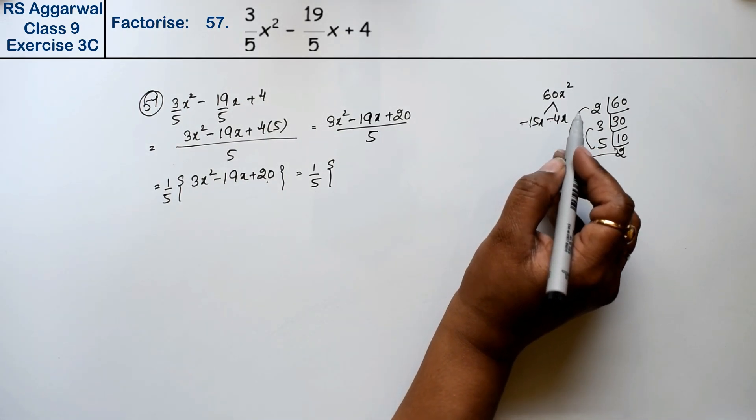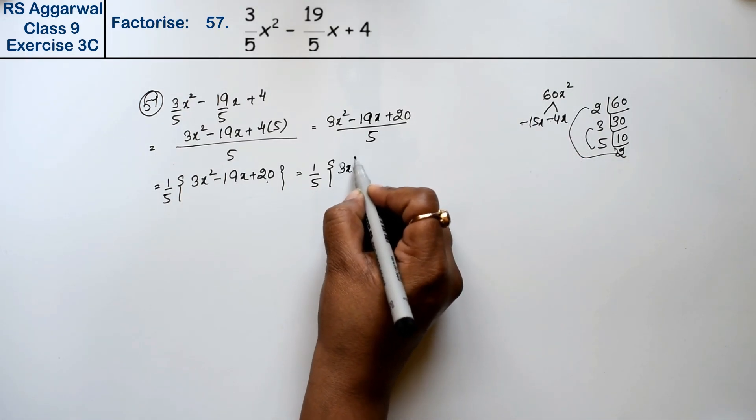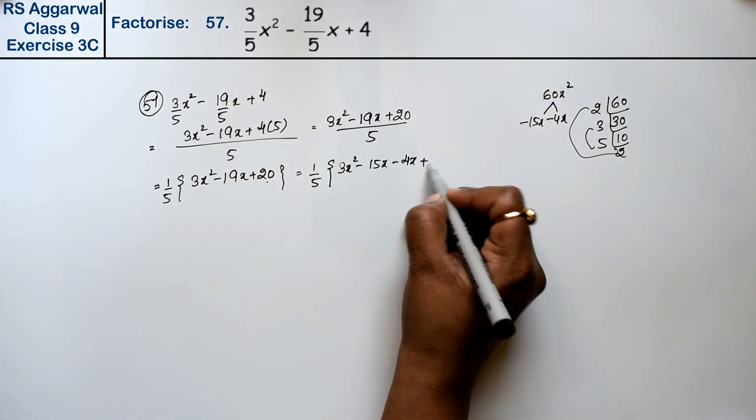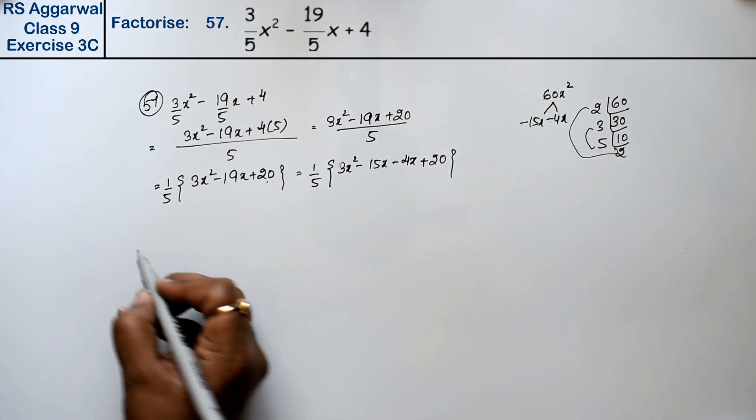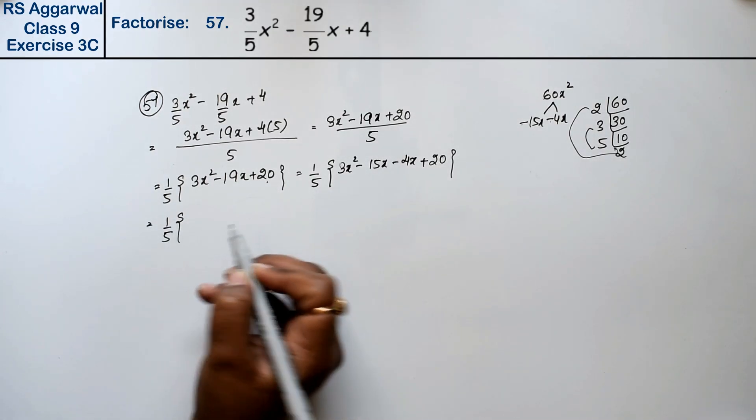So please see my videos where all these points have been explained. So what is this? 3x² minus 15x minus 4x plus 20. See, 1/5 common is there.